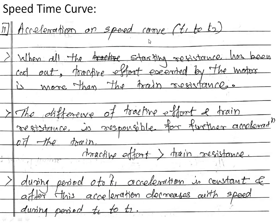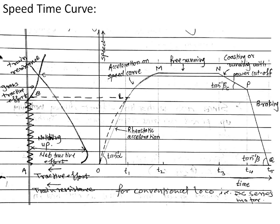Next is the acceleration on the speed curve from period T1 to T2, curve LM. After cut-out of all starting resistances, the tractive effort exerted by the motor is more than the train resistance. The difference of tractive effort and train resistance is responsible for further acceleration of the train. During period OL, acceleration is constant. After T1, acceleration decreases with speed during period T1 to T2.